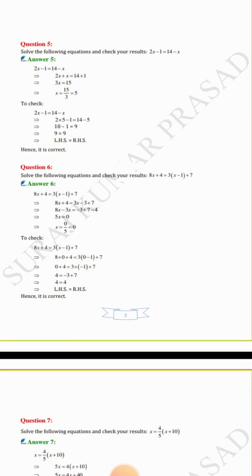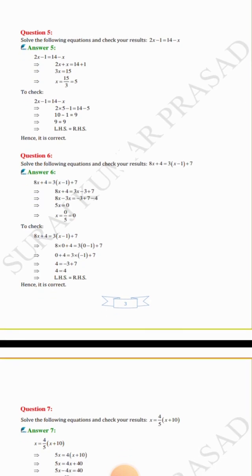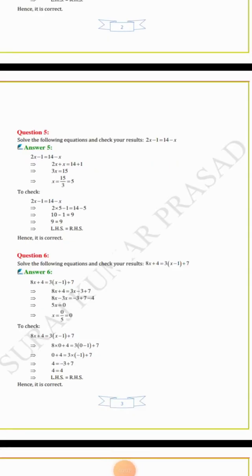To check, substitute x equals 0: 8 × 0 + 4 = 3(0 − 1) + 7 gives 0 + 4 = 3 × (−1) + 7, so 4 equals minus 3 plus 7, giving 4 equals 4. LHS equals RHS, hence it is correct.